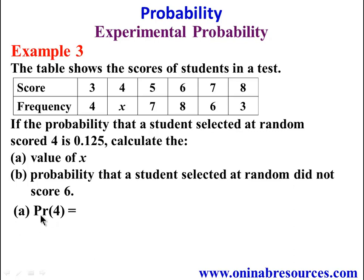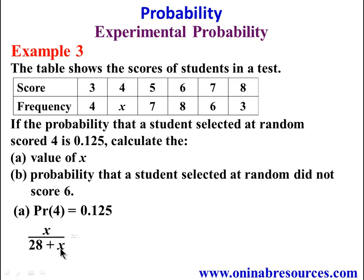In our solution, we are told that the probability of selecting a student at random who scored 4 is 0.125. To get the probability of a student who scored 4, we say the frequency of 4 — this is X — over the sum of the frequencies. That is X over 4 plus X plus 7 plus 8 plus 6 plus 3. Adding the known values: 6 plus 4 gives 10, 7 plus 3 gives 10, that's 28, then plus X. So that's going to give us X over 28 plus X.